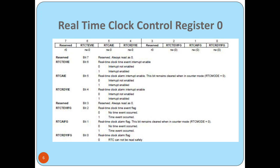The real-time clock has two control registers that control all operations. The first register, RTC control register 0 (RTCCTL0), controls the interrupts. The second register, RTC control register 1 (RTCCTL1), controls the functional operation of the real-time clock.